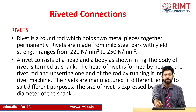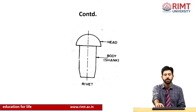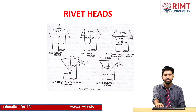Riveted connections use a rivet, which is basically a round metal pin with a body (tail end) and a head. The strength of rivets varies from 220 Newton per mm² to 250 Newton per mm². The tail part is plain and one part is the head. We have four to five different types of rivet heads: snap head, pan head, and pan head with tapered neck.